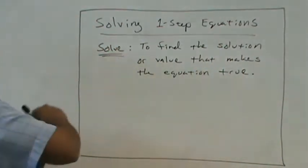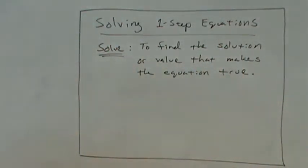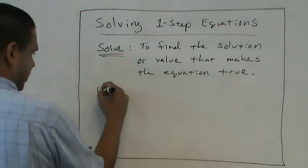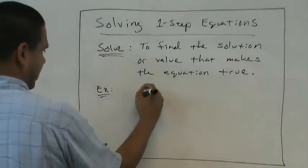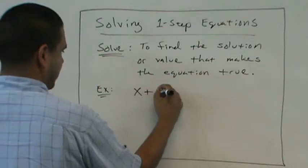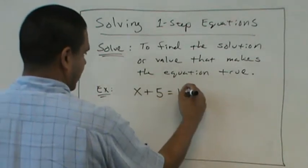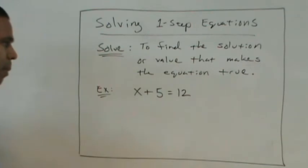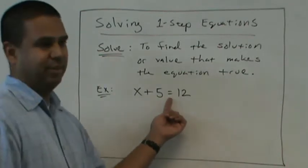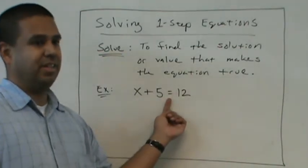So when we solve, we want to find the solution or value that makes an equation true. For example, if I say x plus 5 equals 12. Most of you could solve that in your head, right? So this is an equation. We know it's an equation because there's an equal sign.